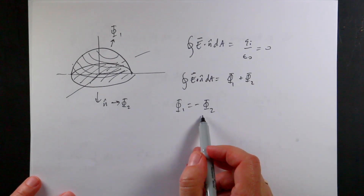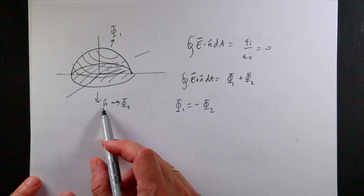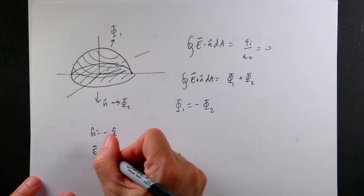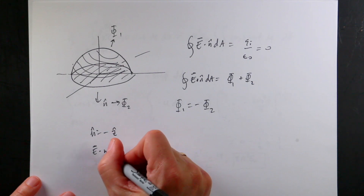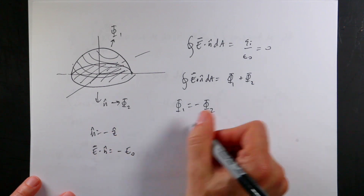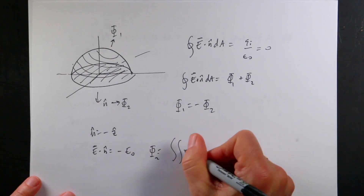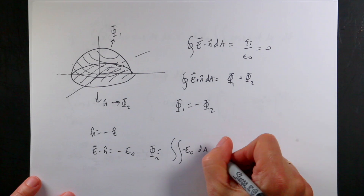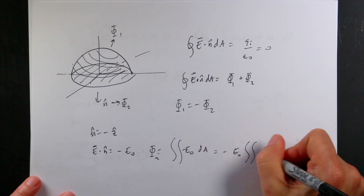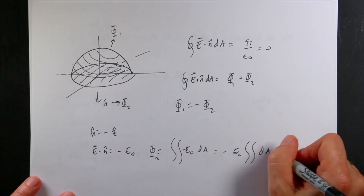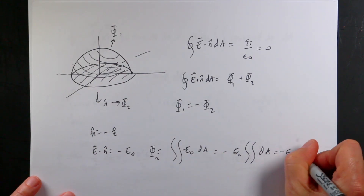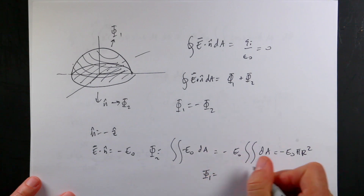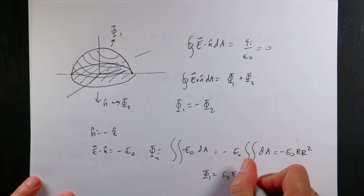So Φ₁ must equal negative Φ₂. I already did Φ₁. Let's just do Φ₂ because it's actually pretty easy. For the flat bottom, n-hat equals negative z-hat because it points in the negative z-direction. So E dot n-hat is just negative e0. Therefore Φ₂ equals the surface integral of negative e0 dA. That's a constant, so pulling it out front gives negative e0 times the double integral of dA — but I'm just integrating over a circle, so that's just negative e0 π R-squared. Therefore Φ₁ is the negative of that: e0 π R-squared, which is the same answer I got before.